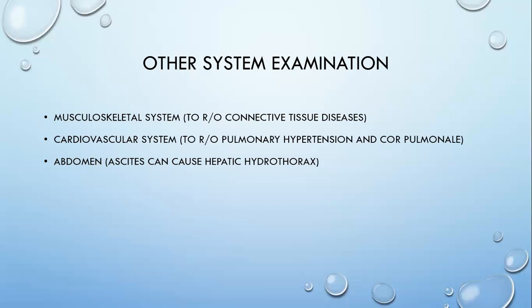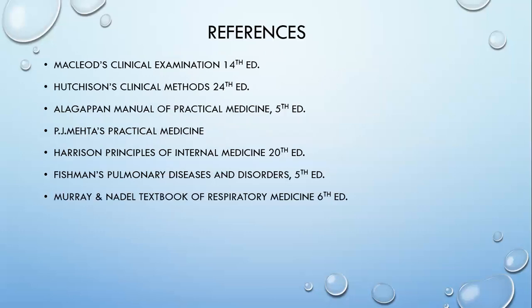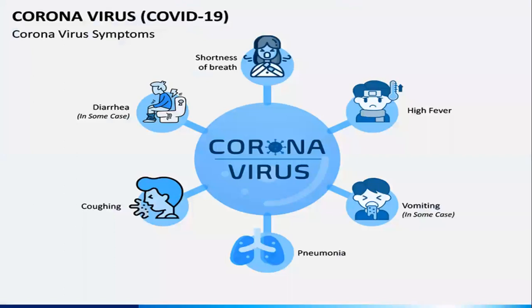So specifically look for the musculoskeletal system, cardiovascular system, and abdomen. These are the references. Murray and Nadal's textbook is mentioned first because Murray was a person who contributed greatly to respiratory medicine, contributing most important points about ARDS. He died due to COVID during the pandemic. Stay safe.